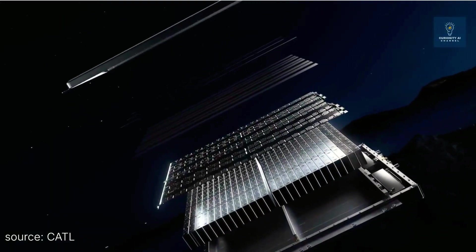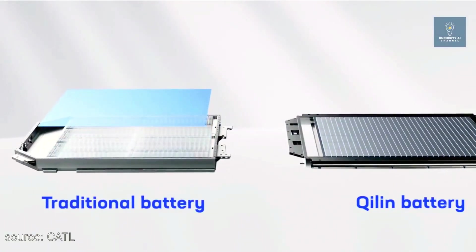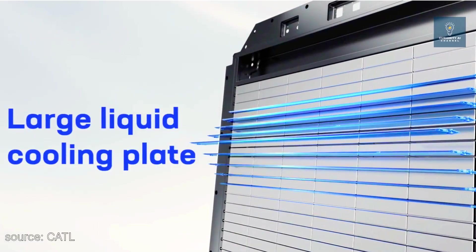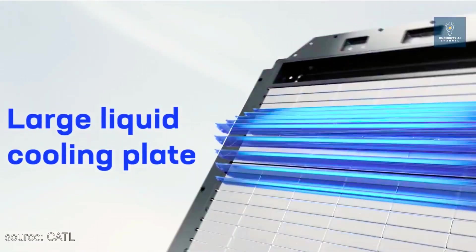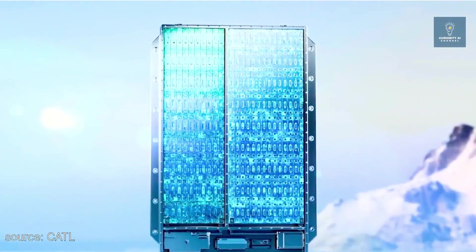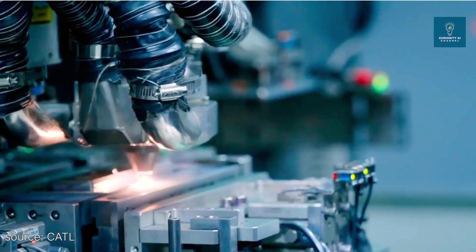Third, revolutionary packaging technologies. CATL's cell-to-pack architecture, particularly their Keelin 3.0 system, achieves 72% volume utilization. That means less wasted space, fewer components, reduced labor costs, and ultimately cheaper batteries per kilowatt hour of storage.